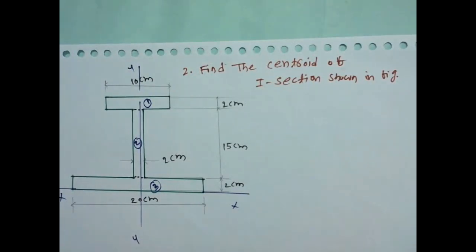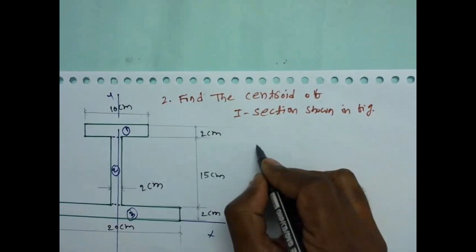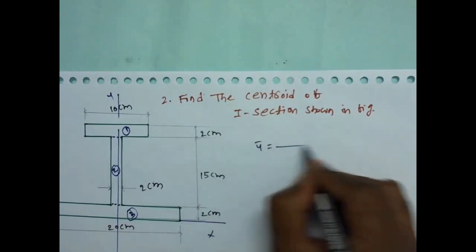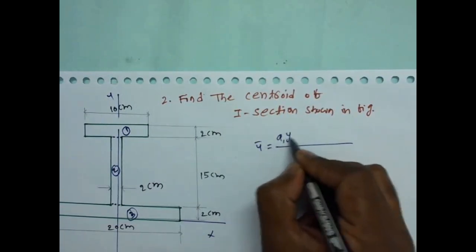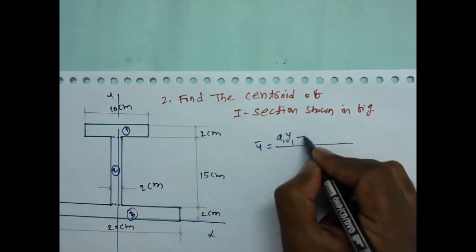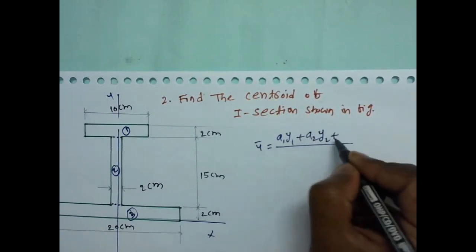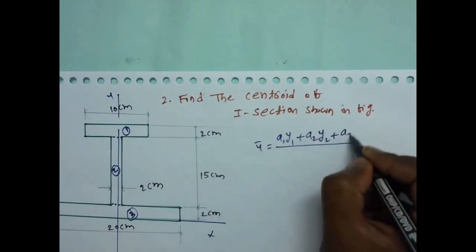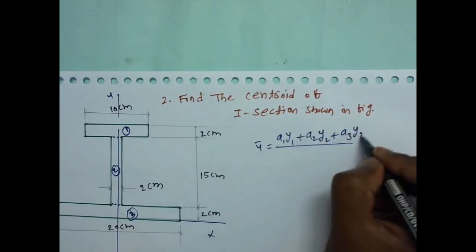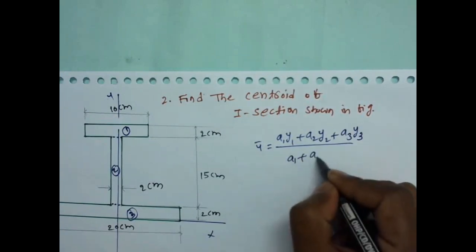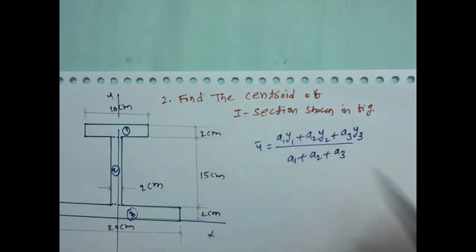Now we have to find the centroidal X-axis. The formula is: Y-bar equal to (A1·Y1 + A2·Y2 + A3·Y3) divided by (A1 + A2 + A3).